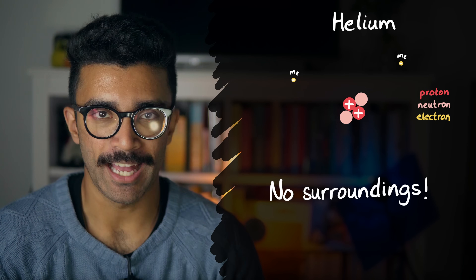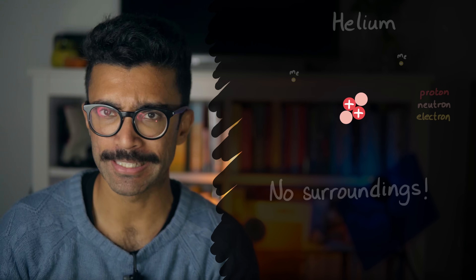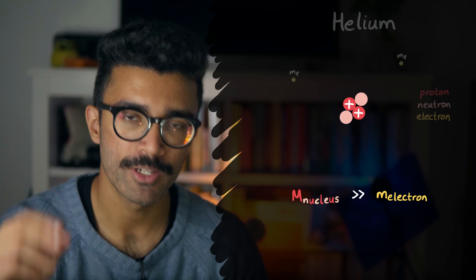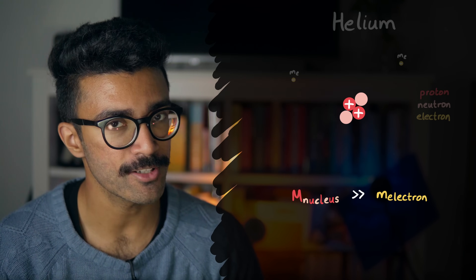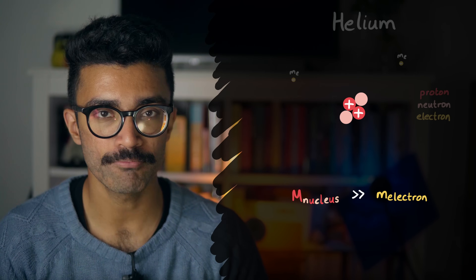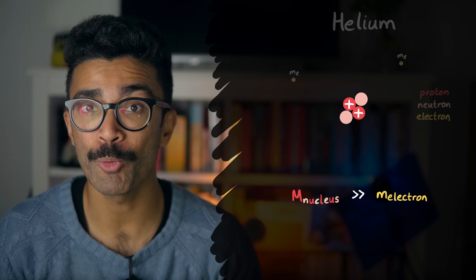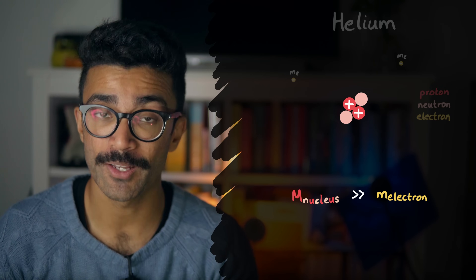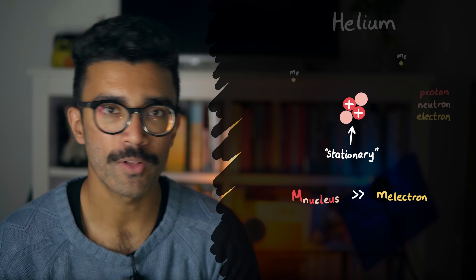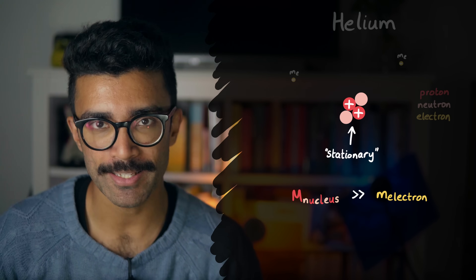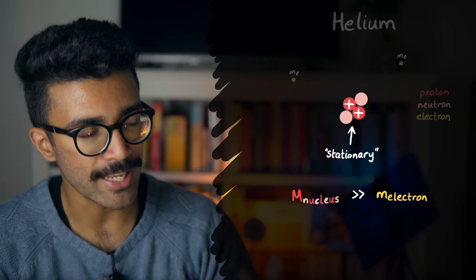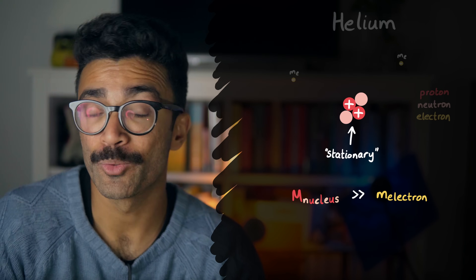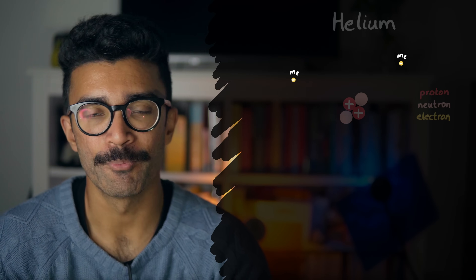For a basic helium atom, the nucleus has two protons and two neutrons for this particular isotope. The mass of the nucleus is much bigger than the mass of either of the electrons — a single proton or neutron is roughly 1,800 to 2,000 times more massive than a single electron, and the nucleus has four nucleons. So one simplification we'll make is treating the nucleus as stationary at the center while the electrons are free to move around it. In reality, both the nucleus and electrons move about their common center of mass.